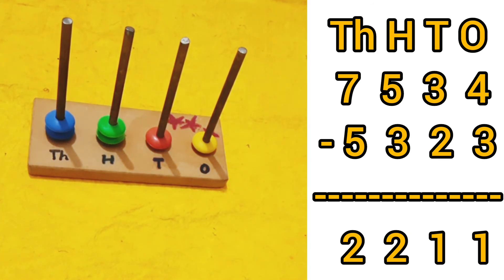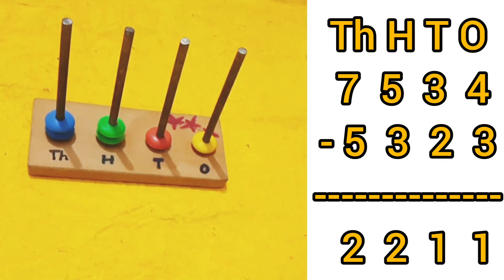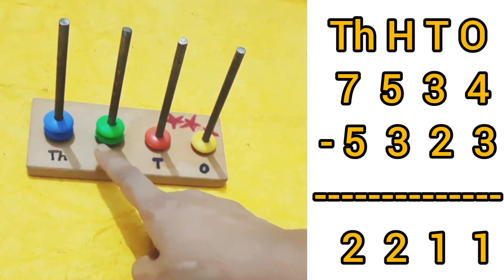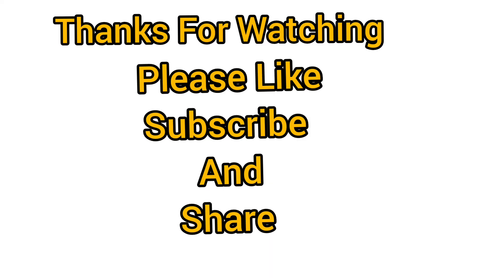So our final answer is two thousand two hundred eleven, because two blue color beads are left at the thousands place, two green color beads at the hundreds place, one at the tens place, and one at the ones place. I hope you understand, thanks for watching.